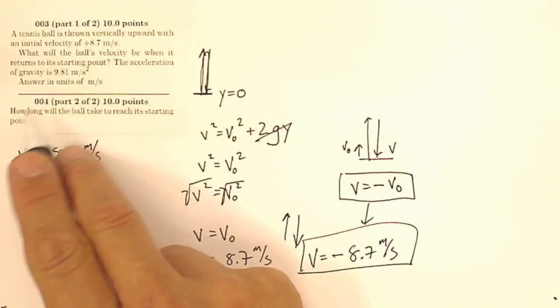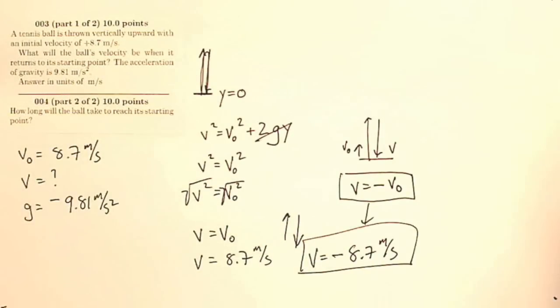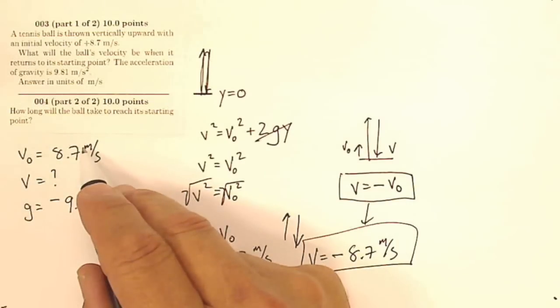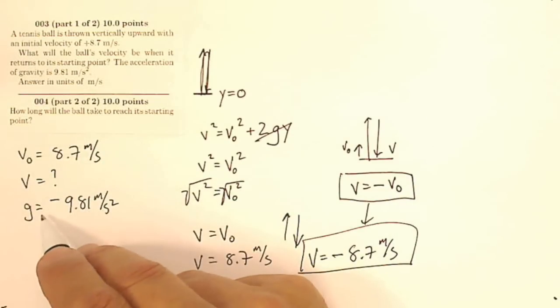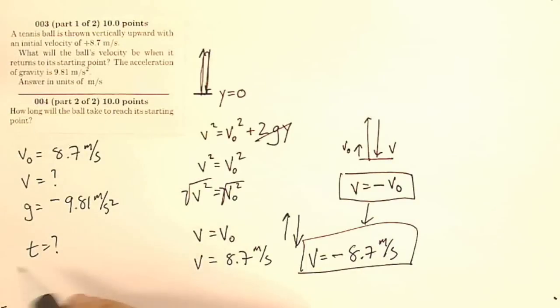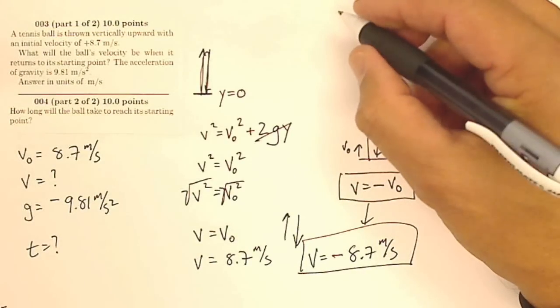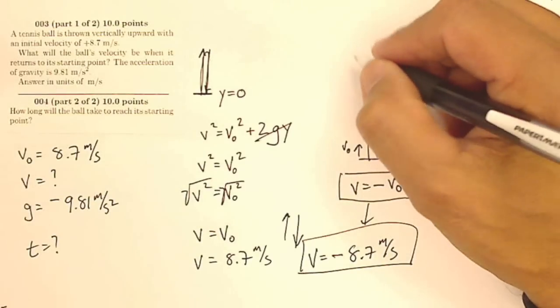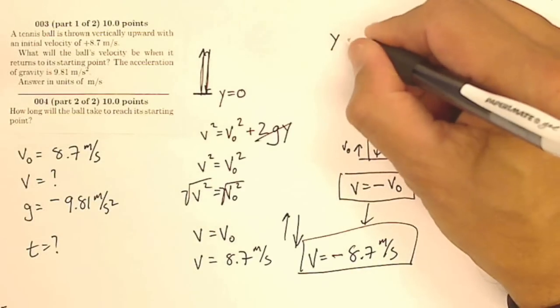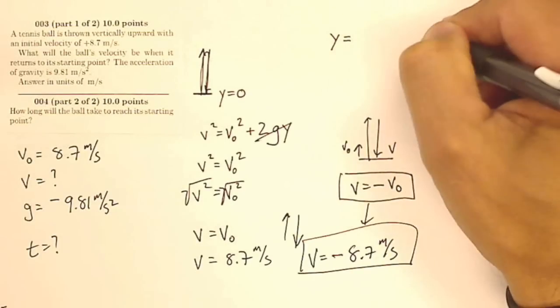The second question, question four, says how long will it take the ball to reach its starting point? Okay, now I want time. So I've got an initial velocity, a final velocity, an acceleration, and I'm looking for my time. Well, my time, that's easy to get to because I have an equation that tells me that my displacement is going to be my average velocity times time.